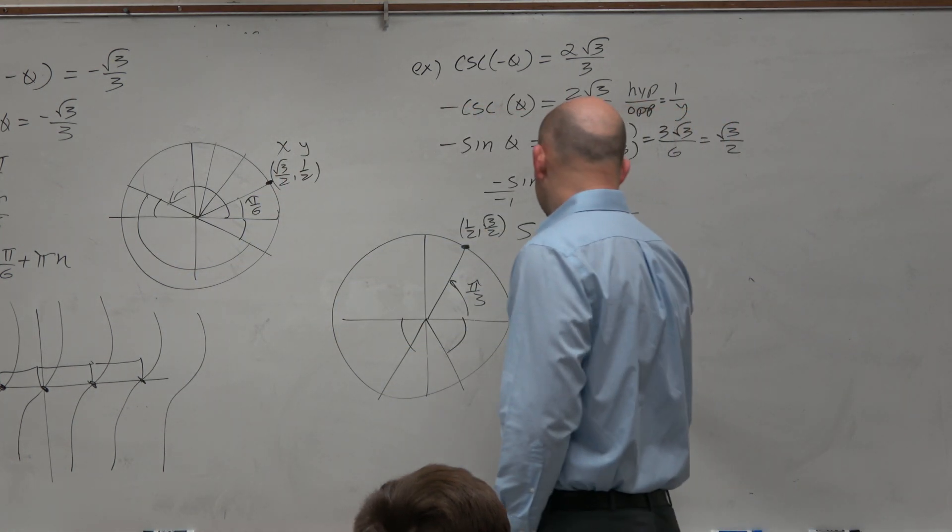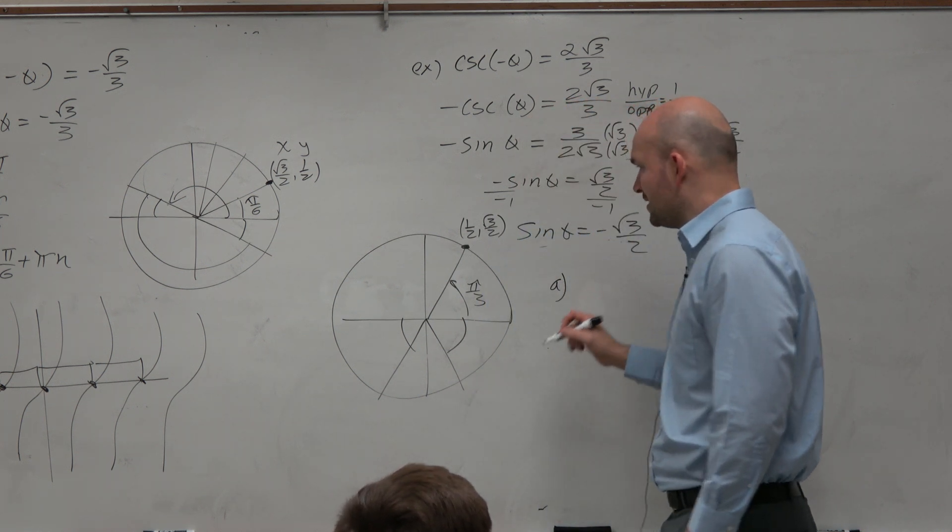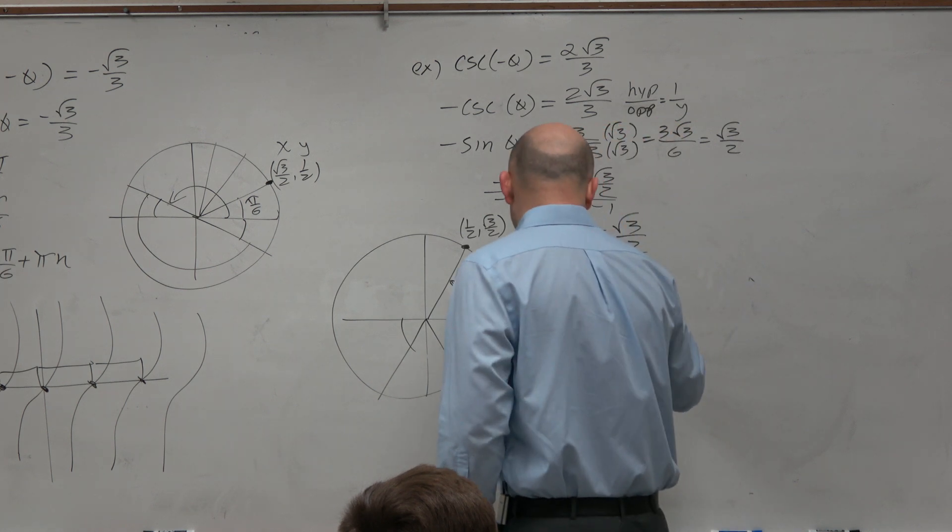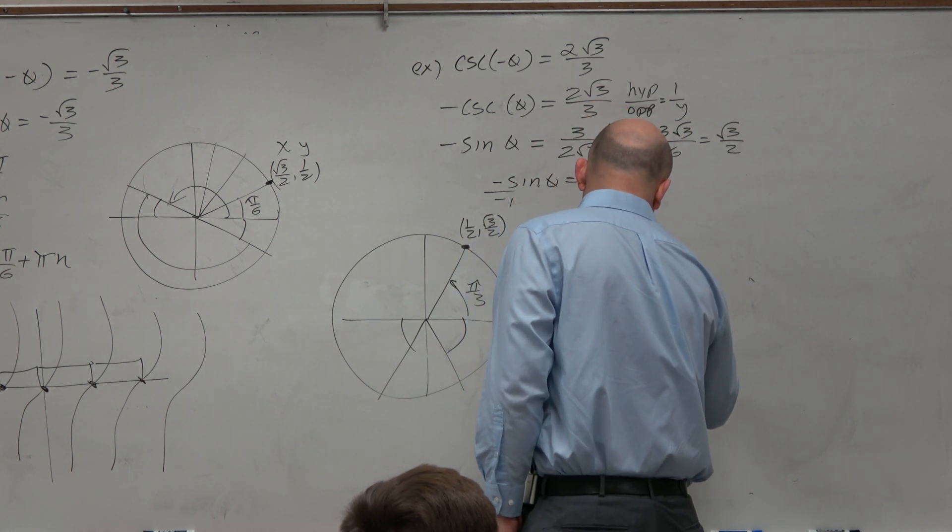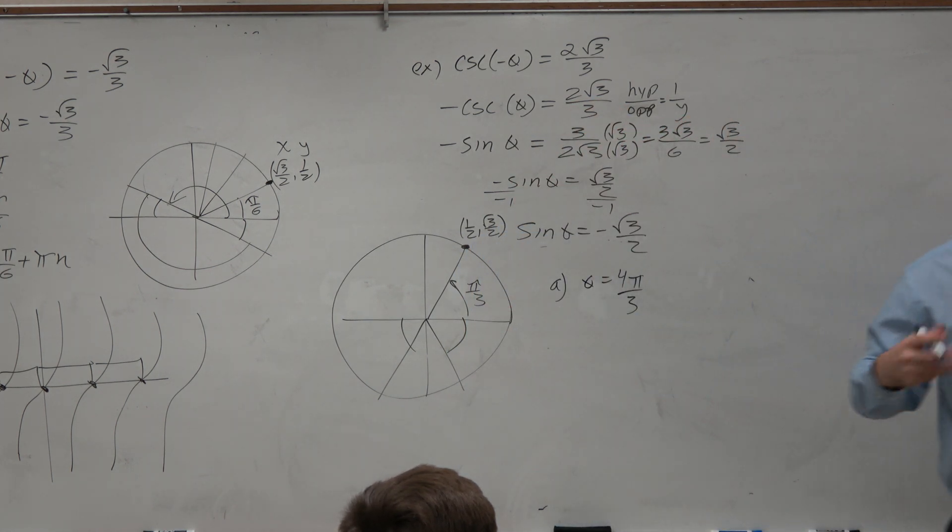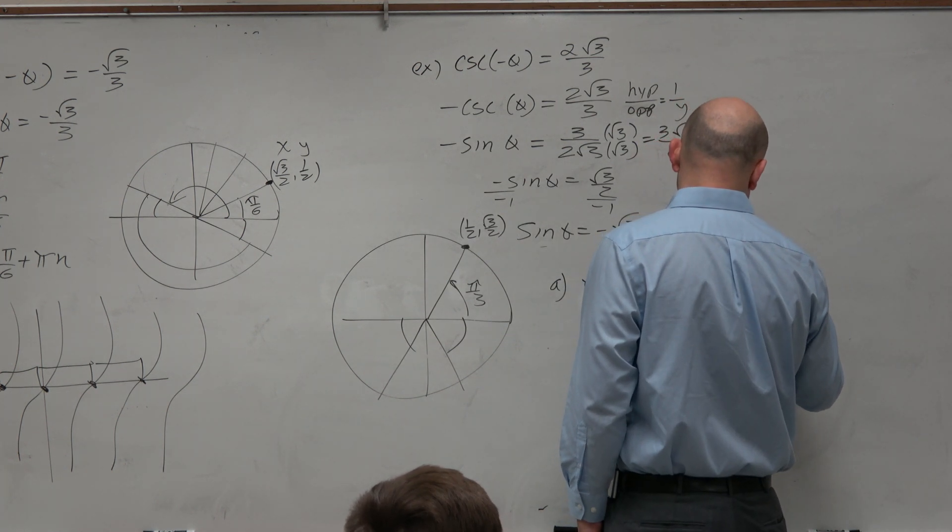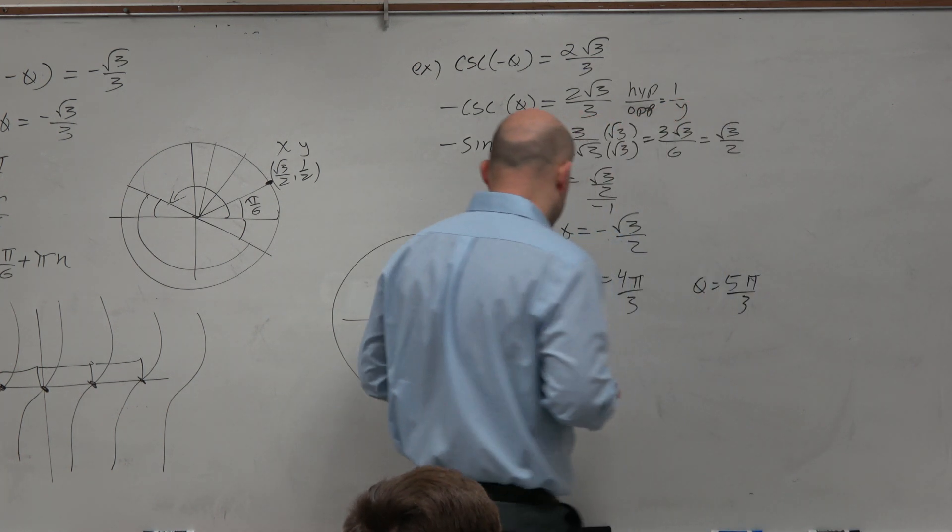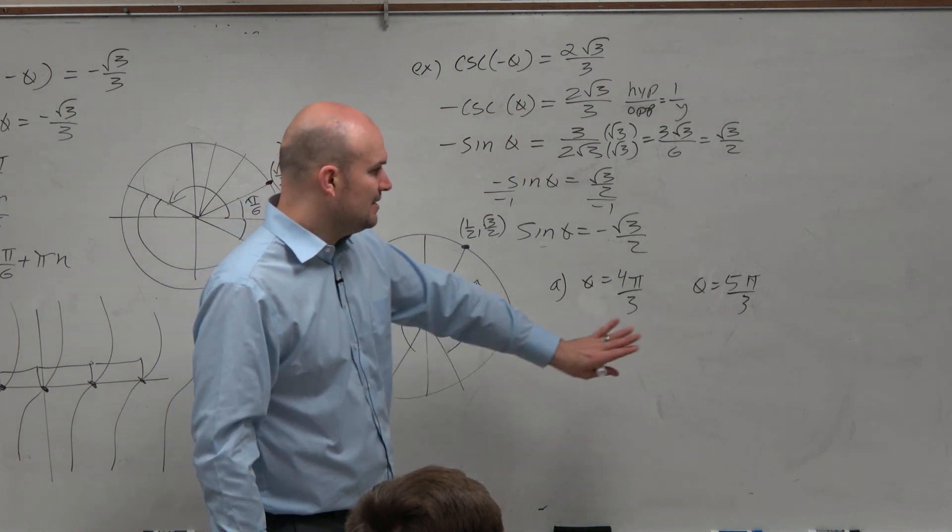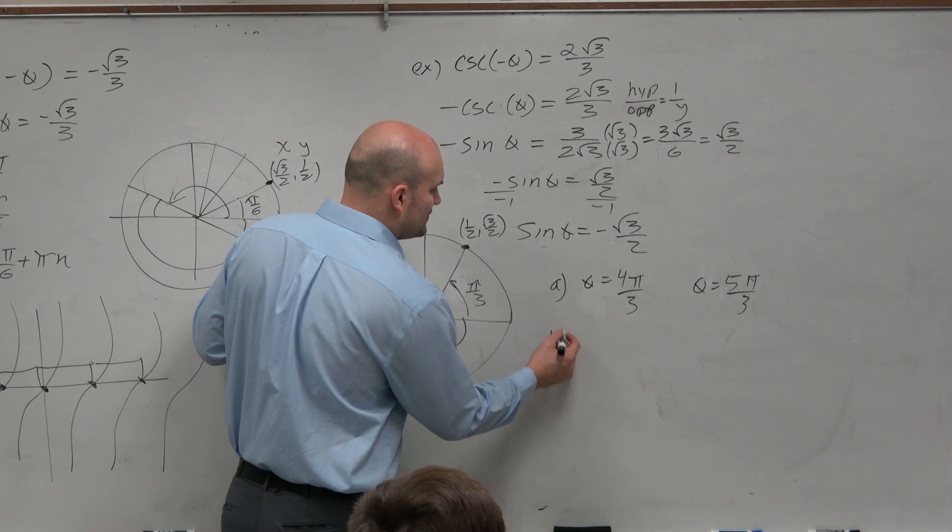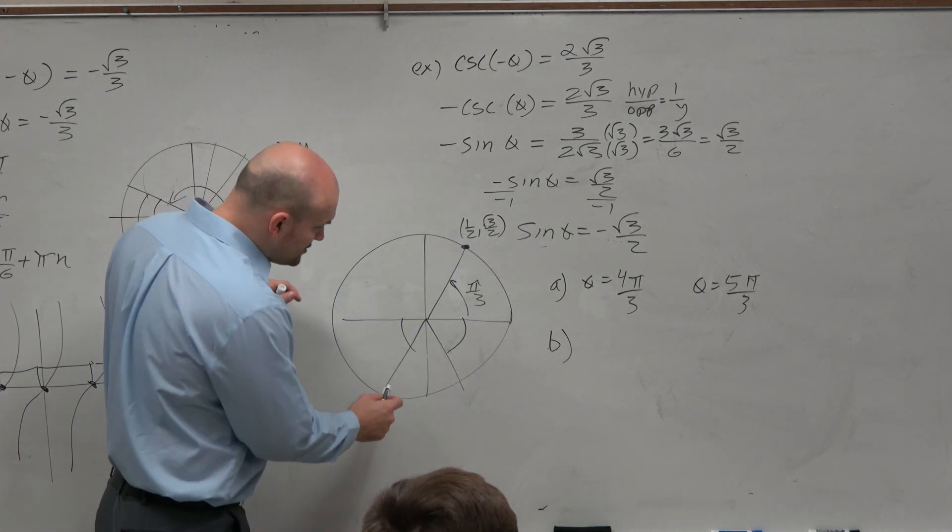And then since we're so good with our unit circle, we know that those two angles is pi over 3 over pi. So that would be 4 pi over 3. And then we have pi over 3 short of 2 pi. So that would be 5 pi over 3. So if I was asking you to find the solutions between 0 and 2 pi, those would be our two solutions. Now, let's go ahead and find all the solutions. Here's your two solutions.